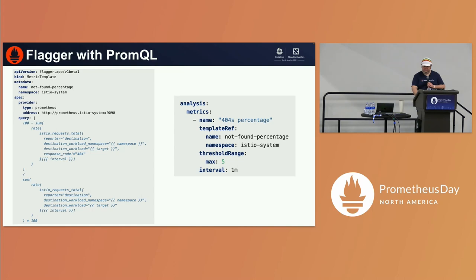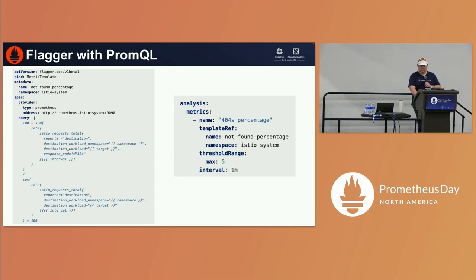This is how you attach a metric template to a canary object. In our case, we don't want the not-found percentage to be more than 5%.